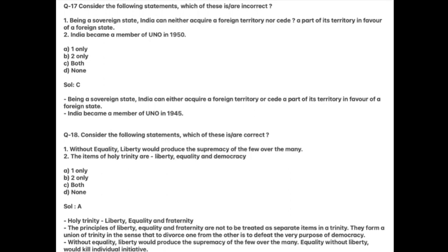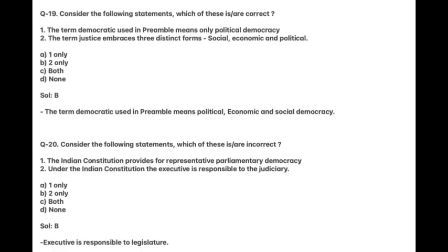Equality without liberty would kill individual initiative. Next: Consider the following statements. Which of these are correct? One: The term democratic used in the Preamble means only political democracy. Two: The term justice embraces three distinct forms — social, economic, and political. Answer is B. The term democratic used in the Preamble means political, economic, and social democracy.